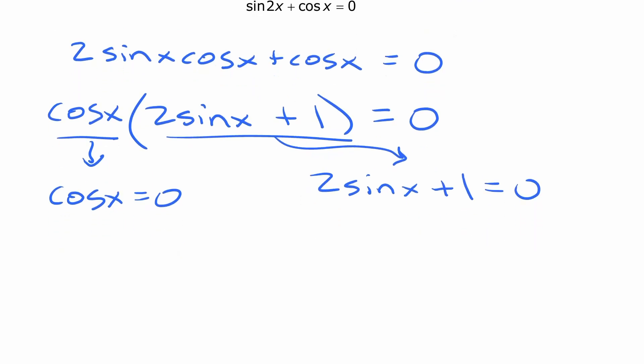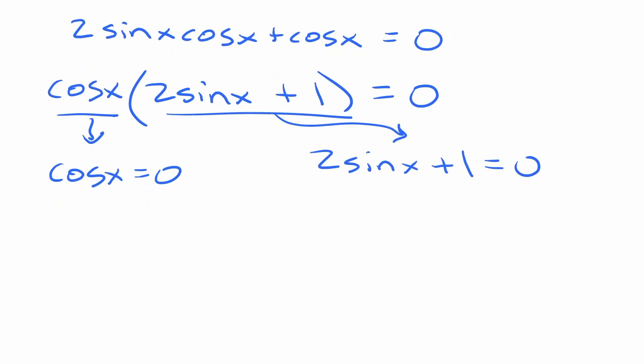And so if we follow that down, on the one on the right here, 2 sine x equals negative 1, or in other words, sine x equals negative 1 half. Now both of these things we're going to be able to solve without a calculator because those are both exact values.